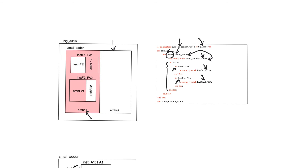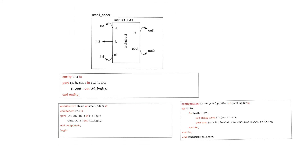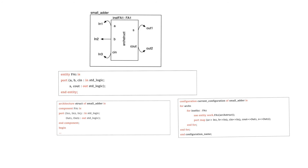The other use of configurations is to adapt the port names of a component before it's used in another design. For example, we have an entity called FA1 defined with ports named A, B, C_in, S, and Cout — a full adder with three input bits and two output bits. We have an architecture of a larger design called SmallAdder which uses multiple instances of the full adder, but the port names are different: ports A, B, and C_in are renamed to N1, N2, and N3, while S and Cout are renamed to Out1 and Out2.